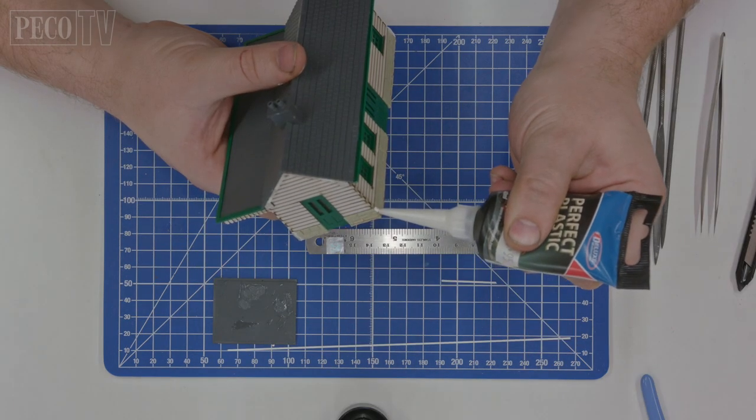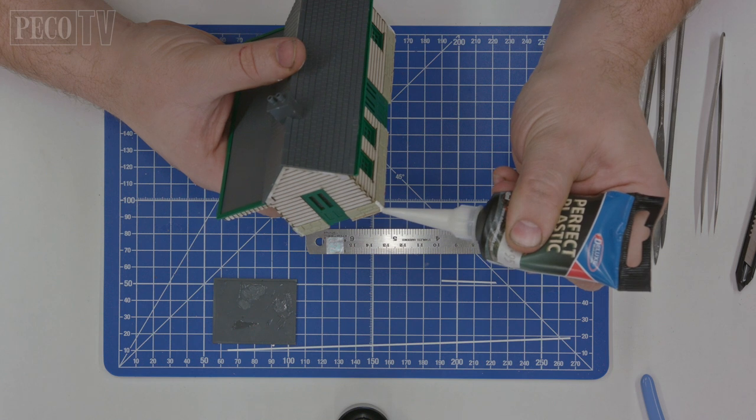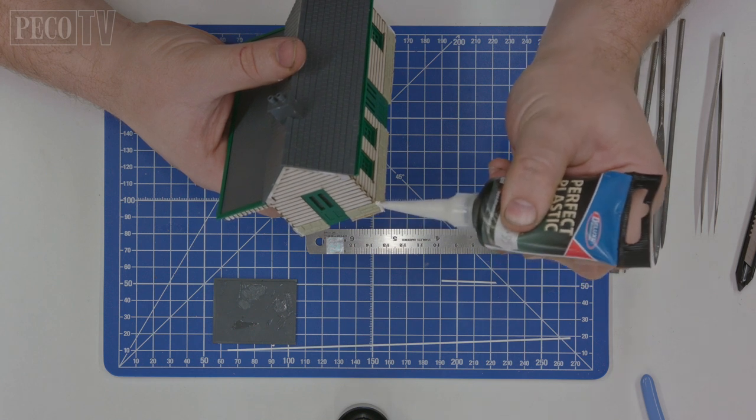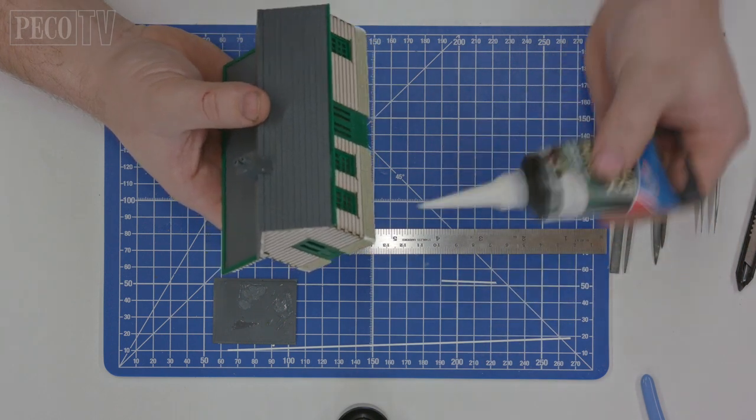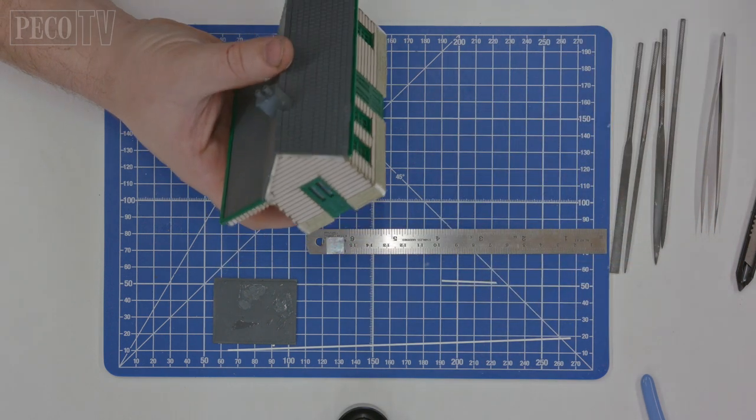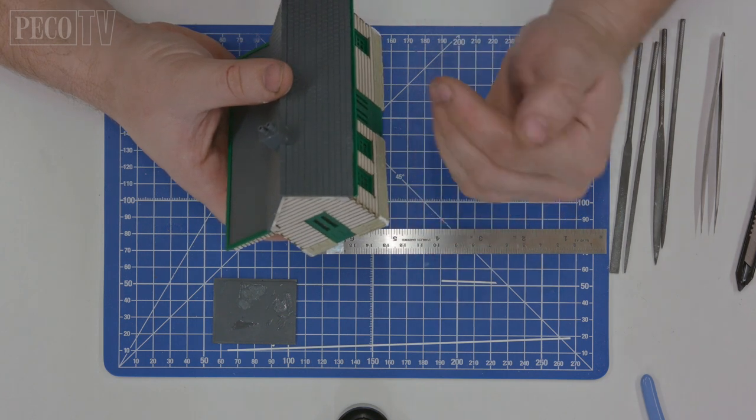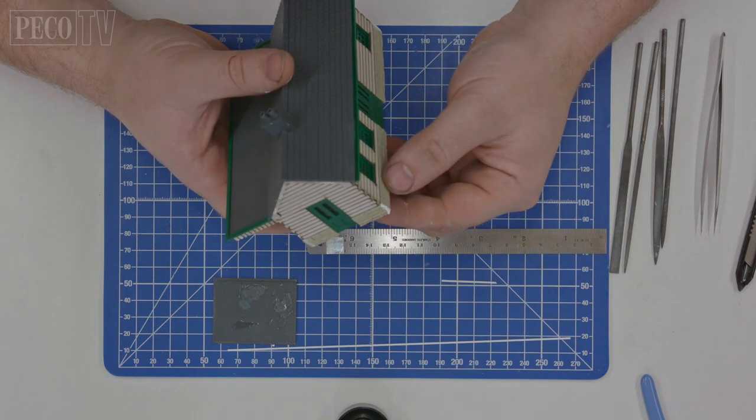Take the plastic filler and fill the edges on all four corners of your brickwork. It's always best to apply a little bit more than you feel is necessary as you can sand it away and then scribe the patterns of the brickwork into it once it has dried.